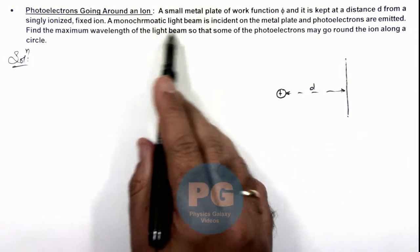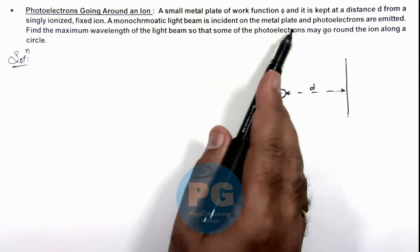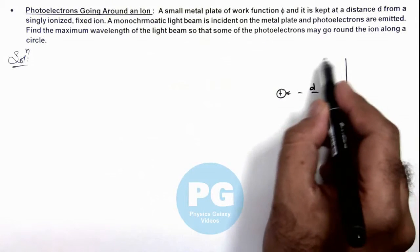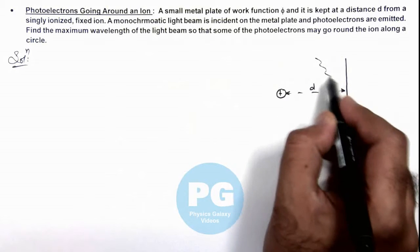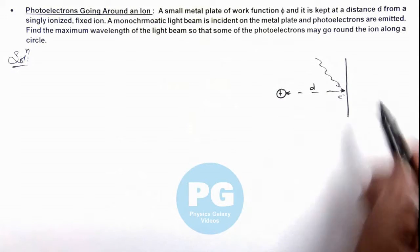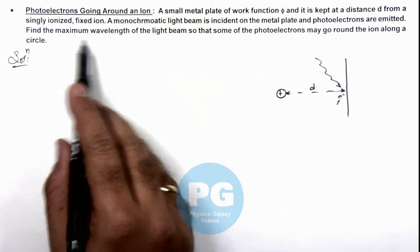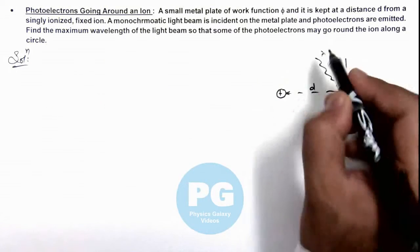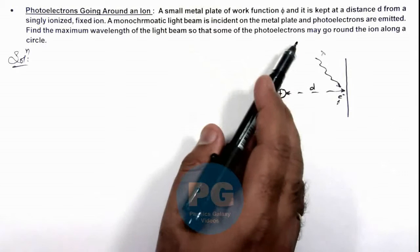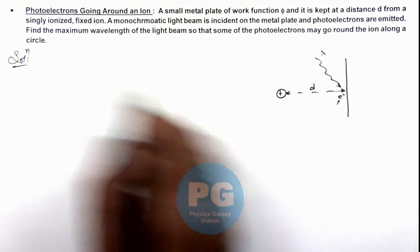A monochromatic light beam is incident on the metal plate and photoelectrons are emitted. So if radiations fall on it, electrons are emitted from this plate. And we are required to find the maximum wavelength of this light beam so that some of the electrons may go round the ion along a circle.